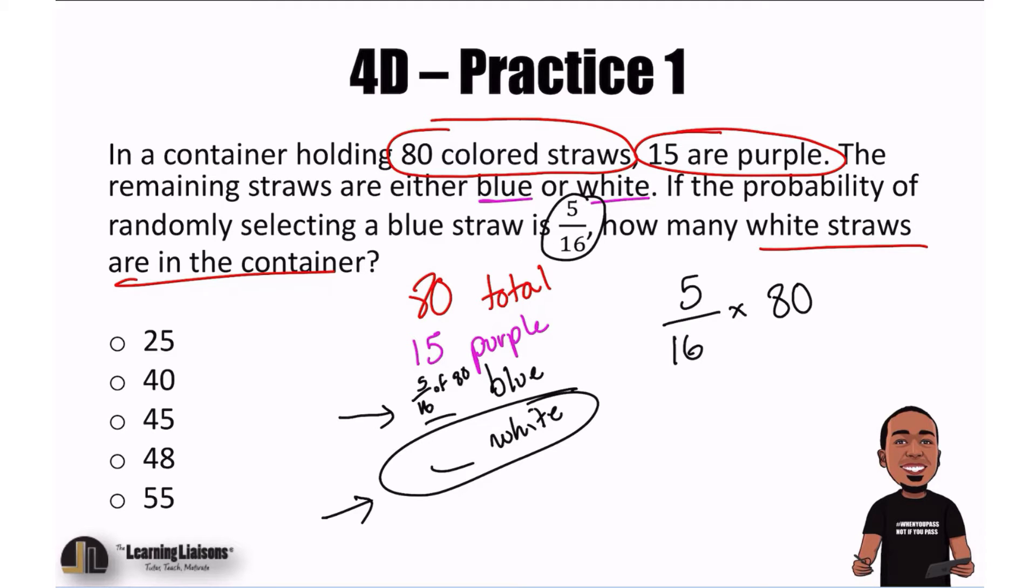And so again, we saw that 5 sixteenths of the straws are blue. So 5 sixteenths of the total amount, which is 80. Let's do some math here.